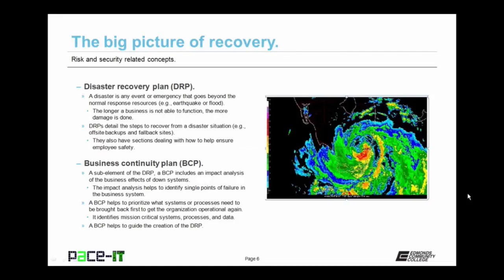They also have sections dealing with how to help ensure employee safety. A sub-element of the DRP is the business continuity plan, or BCP. A BCP includes an impact analysis of the business effects of downed systems. The impact analysis helps to identify single points of failure in the business system. A BCP helps to prioritize what systems or processes need to be brought back first to get an organization operational again. It identifies mission-critical systems, processes, and data. The business continuity plan helps to guide the creation of the disaster recovery plan.